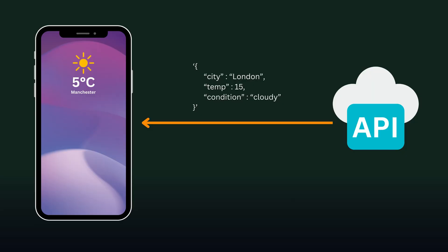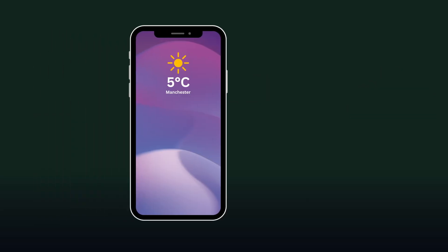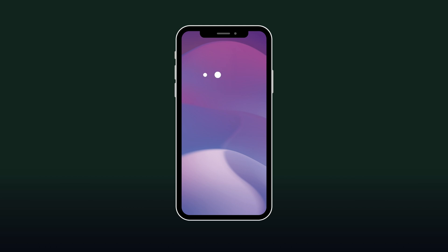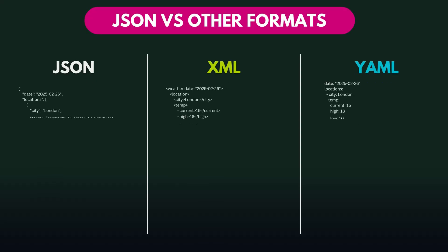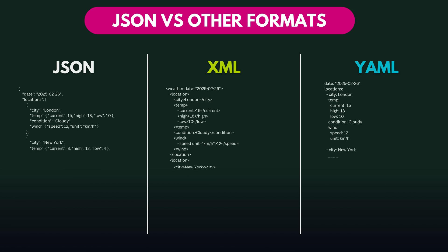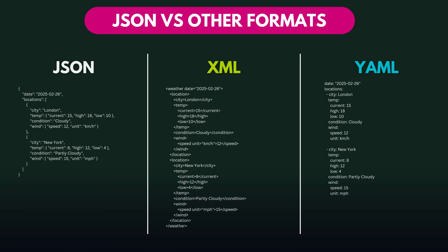Once JSON has been parsed, it can be used or displayed, and in our weather app it could say it's 15 degrees and cloudy. So why is JSON used so widely by modern APIs? Well, if you compare it to other formats like XML and YAML, it's actually quite easy to read. It's also lightweight and fast because it uses minimal data, and most programming languages can use JSON.